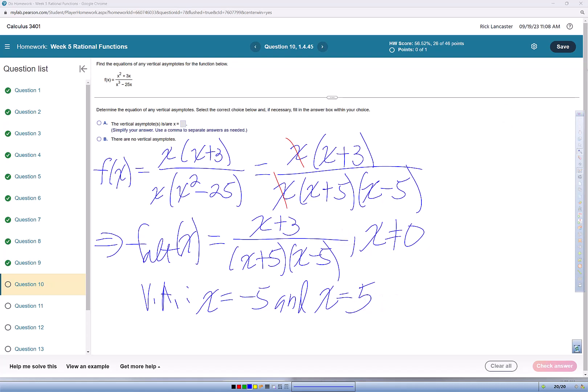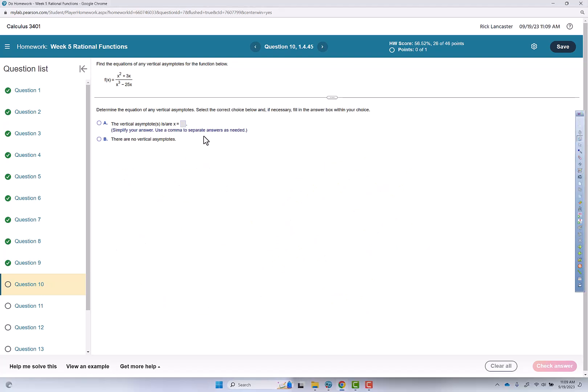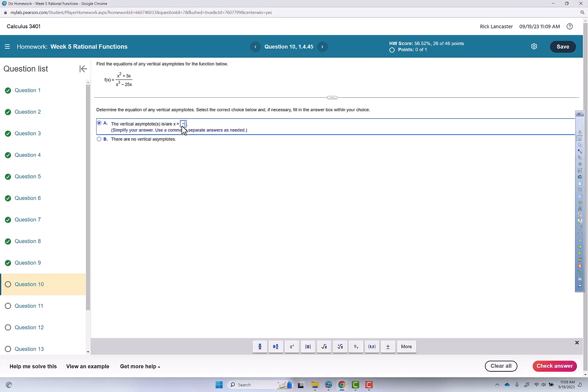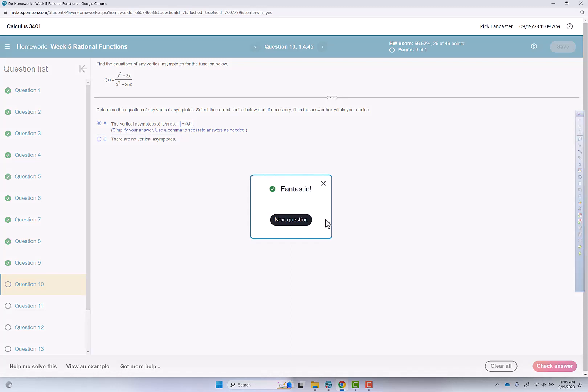So I'm going to go ahead and put those answers in and then we're going to come back and talk about other things in this rational function. So x equals negative 5, x equals positive 5. Check answer. Fantastic.